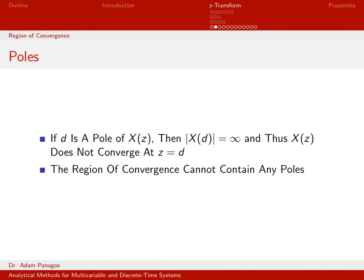When evaluated at the pole location, the magnitude of my Z-transform equals infinity. So I know I'm never going to have any poles in the region of convergence, and we've seen that time and time again in the examples we've worked.